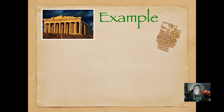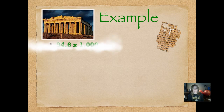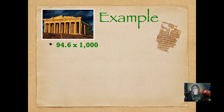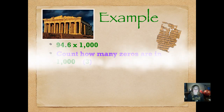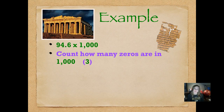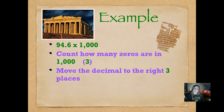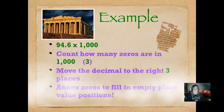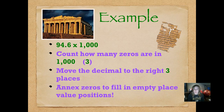Here's an example: 94 and 6 tenths times 1,000. Here are some hints before we actually do this example. The first thing you're going to do is count how many zeros are in the number 1,000 — there are actually three. Then we're going to move the decimal to the right three places because there are three zeros. And if we need to, we're going to annex zeros to fill in the empty place value positions, because leaving them off would change the value of the number.